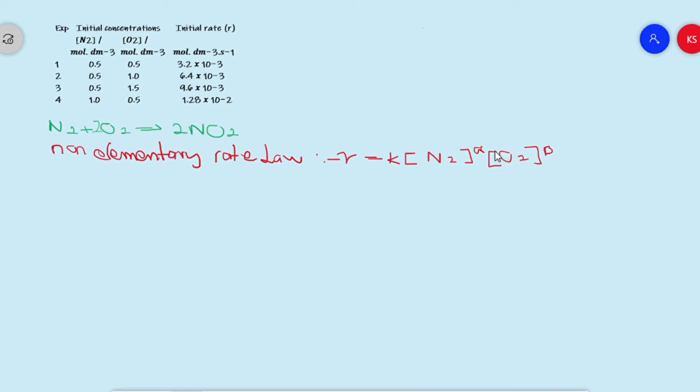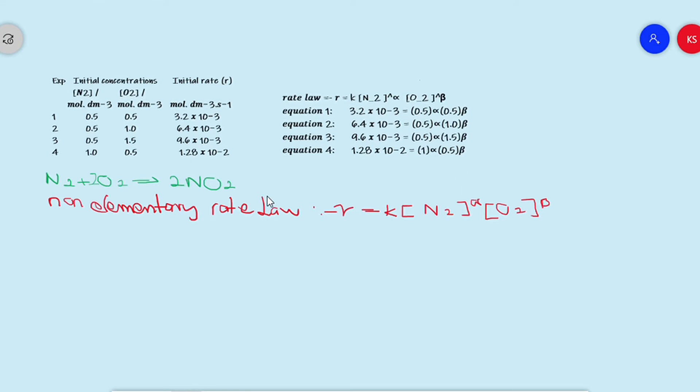To calculate the unknowns, we will first have to write down the equations for the four different experiments. So equation one will be represented in this format here, which will be rate equals to k, which is unknown, and the initial concentration of oxygen and the initial concentration of nitrogen. Writing down every equation for myself. Here are my four experimental equations written down for myself, representing each experiment.